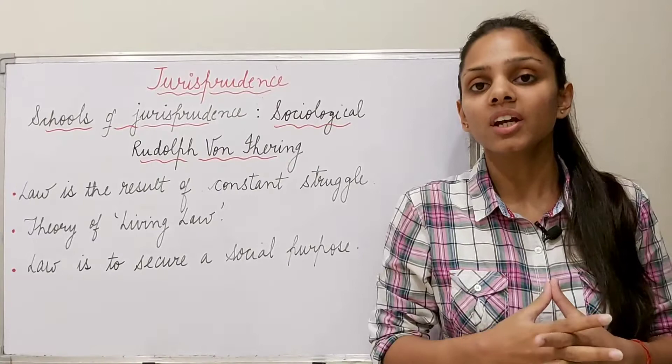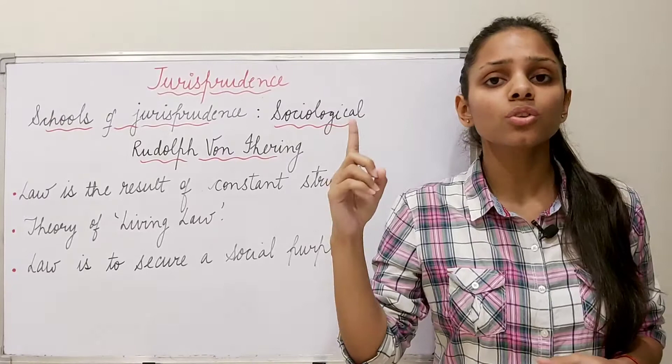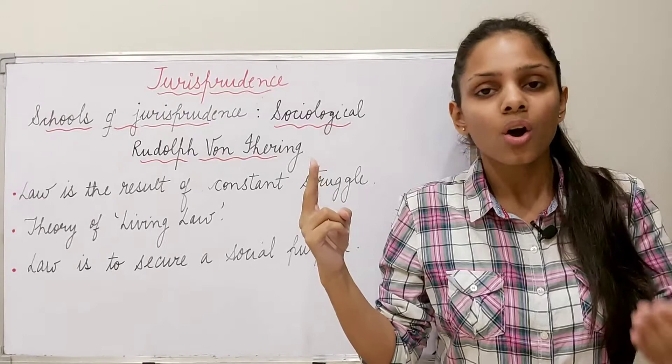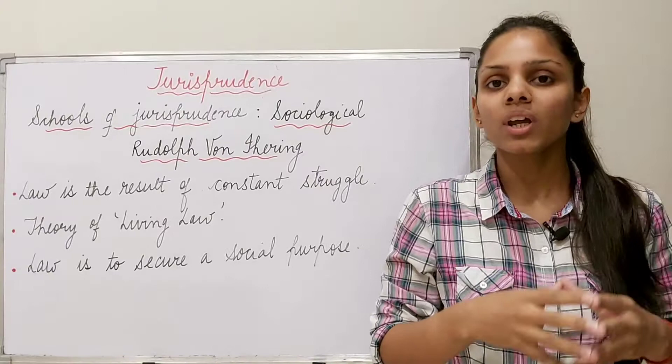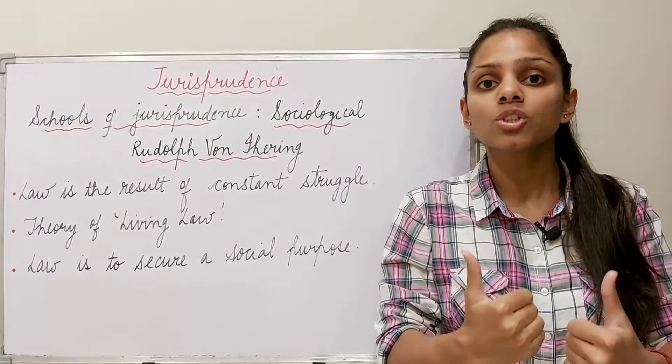Just like Jeremy Bentham, Ihering also said that interest is defined in terms of pain and pleasure — the pursuit of pleasure and avoidance of pain. Whatever gives you pleasure, promoting that, and whatever gives you pain, avoiding that — that is interest. Now this kind of self-interest or self-centered interest is always something we should be cautious about, because it can give pain to others in society.